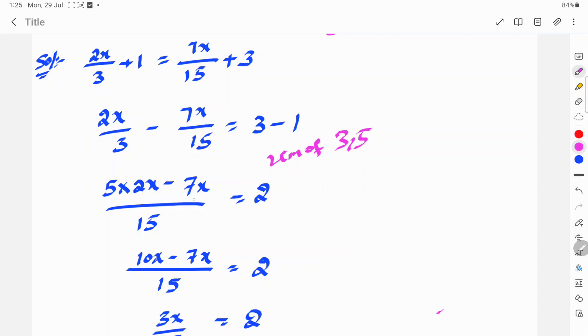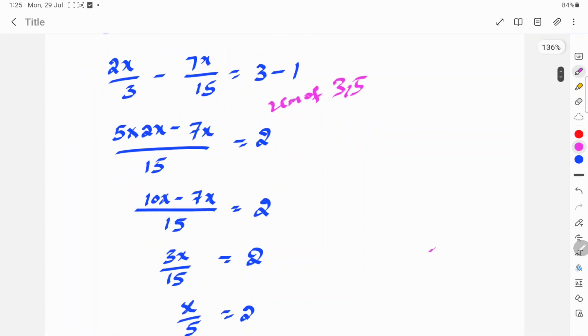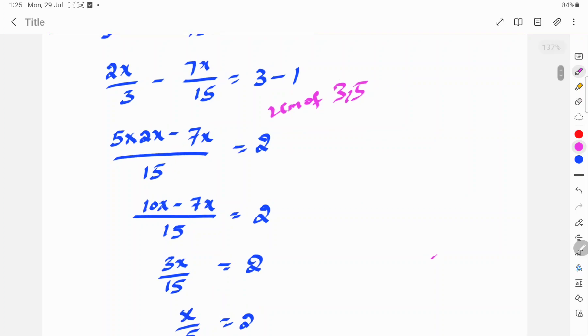So, 1 into 7x is equal to 3 minus 1, which is 2. So, 10x minus 7x by 15 is equal to 2.